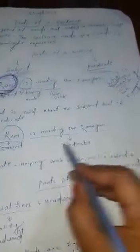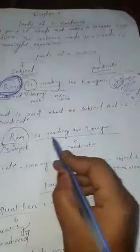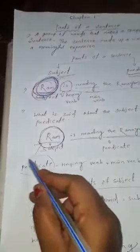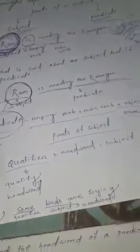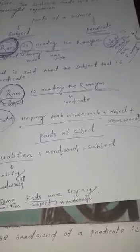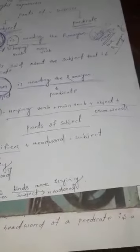The rest part of the sentence is the predicate. Students, listen carefully. When you find out the subject in the sentence, the rest part of the sentence is the predicate. A predicate always consists of helping verb plus main verb plus object plus other words. When you find out the subject and put it aside, the other part of the sentence is called the predicate.